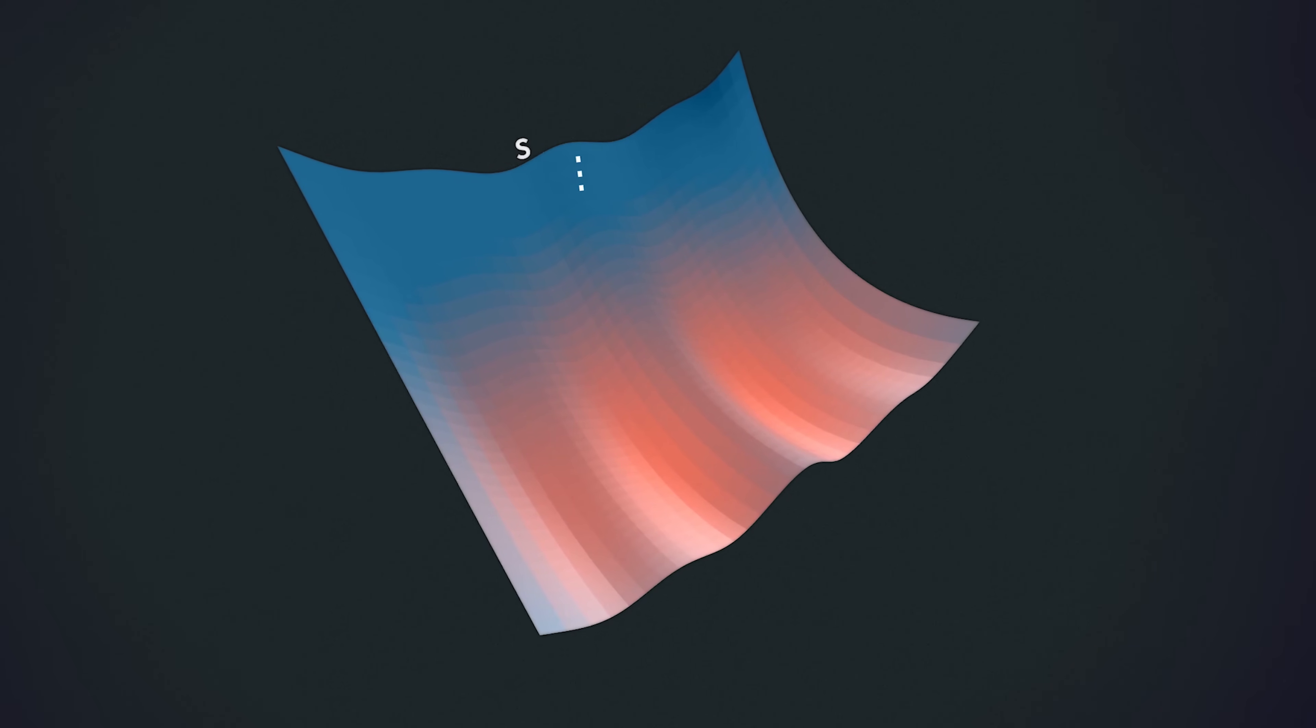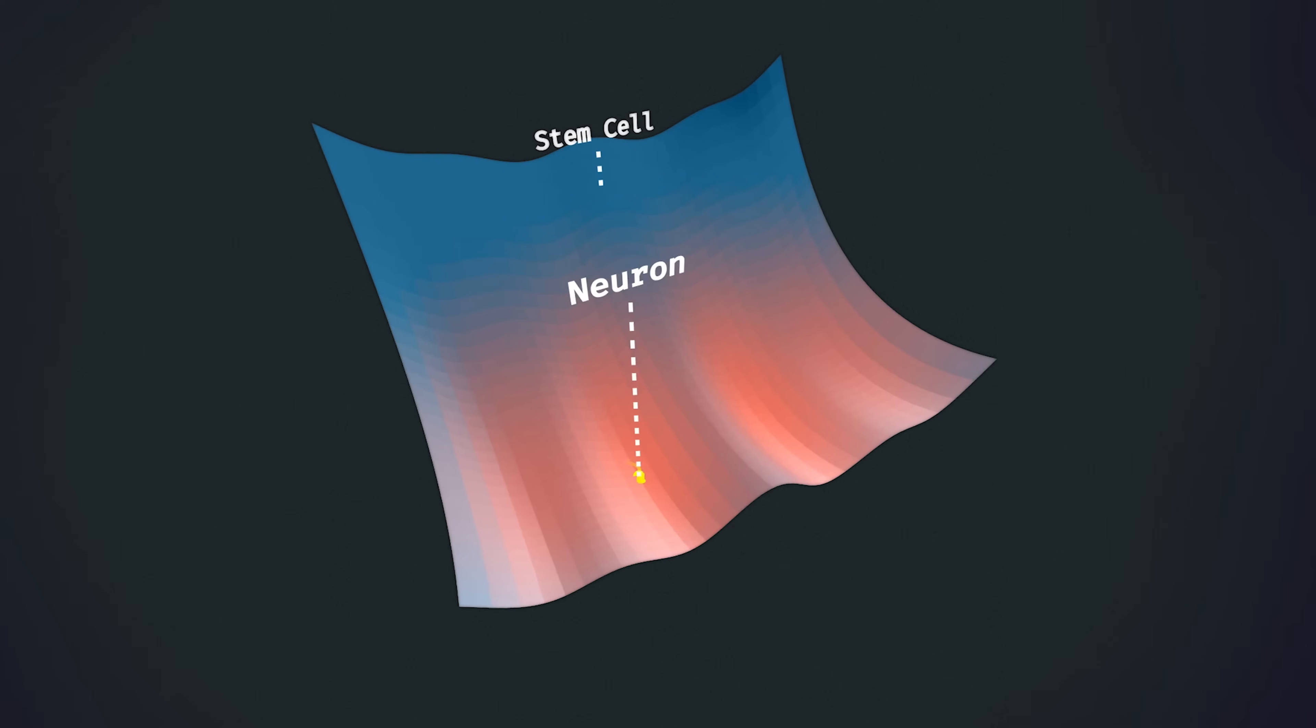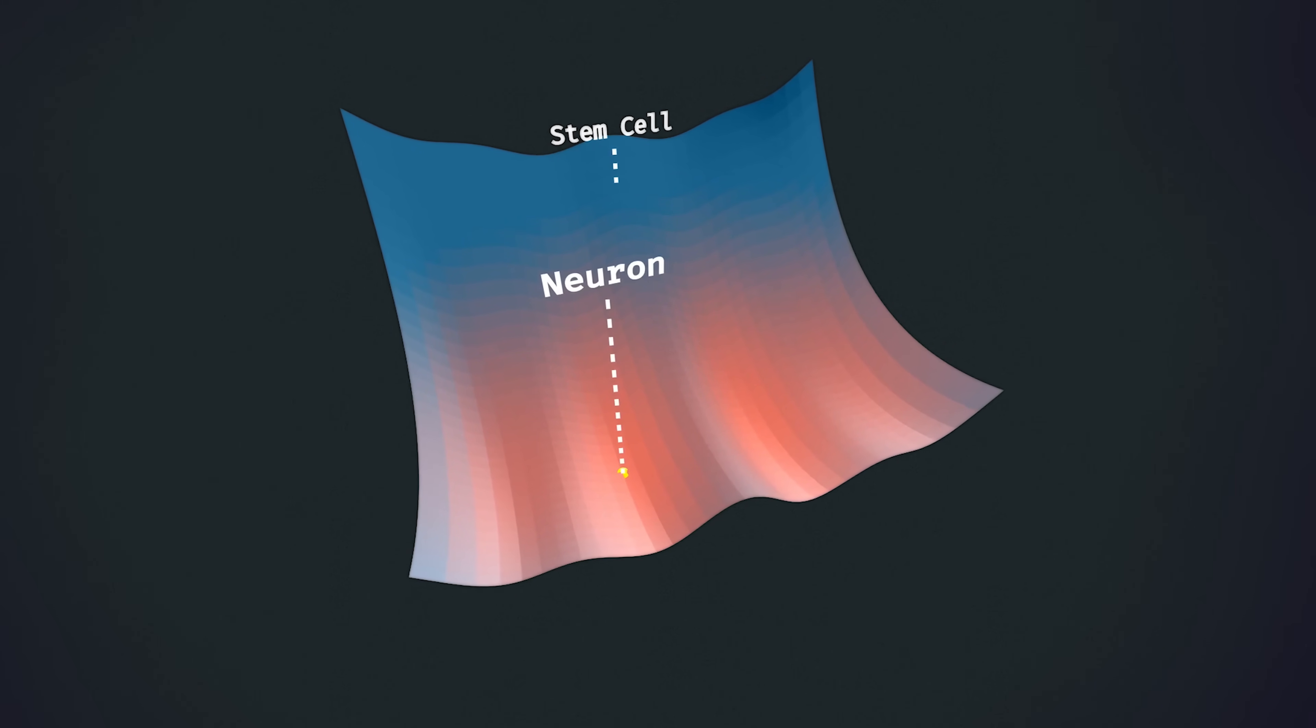Waddington imagined that throughout development, cells descend the slopes of this landscape in order to end up in its valleys. For instance, here we have the trajectory from a stem cell to a neuron. The visualisation highlights that cells with low pluripotency tend to remain in their developed form. Even when we give this marble in the neuron valley a substantial nudge, we see that it falls back into place.